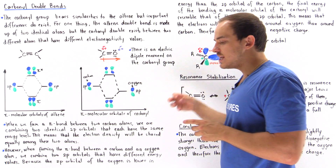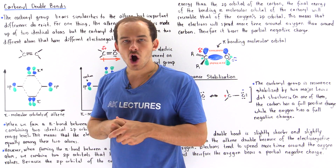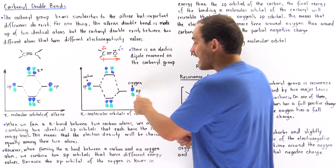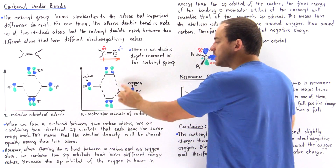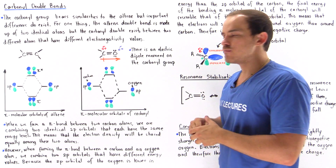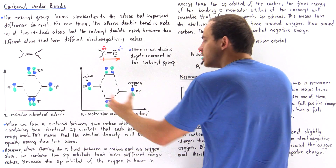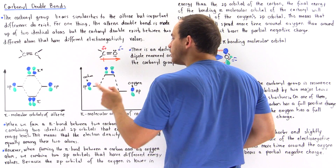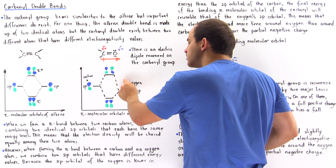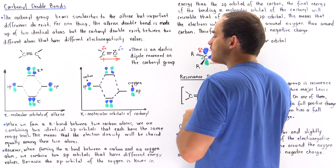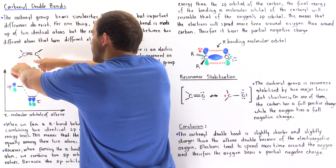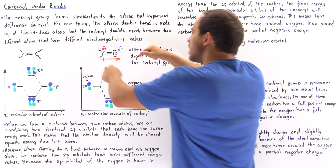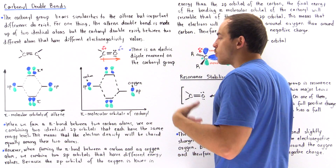Oxygen is more electronegative than carbon. Because of this, when oxygen contributes a 2p orbital to form the pi bond, that 2p orbital will be lower in energy and more stable than the 2p orbital of carbon. So in forming the pi system, we are combining two 2p orbitals that are different in energy — unlike the alkene case where both carbons have the same electronegativity.